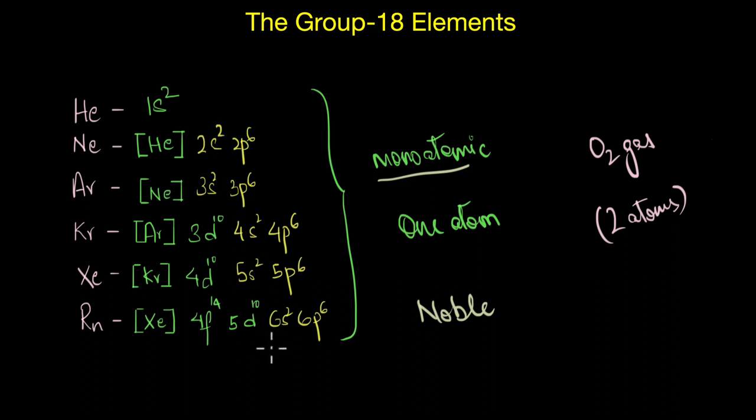Now as you can see here, there's a highly stable configuration. So that means these elements have no tendency to lose or gain electrons, because on doing so this stability will get lost. And as a result, these elements form very few compounds, and only under specific conditions, and mostly with highly electronegative elements like oxygen or fluorine.